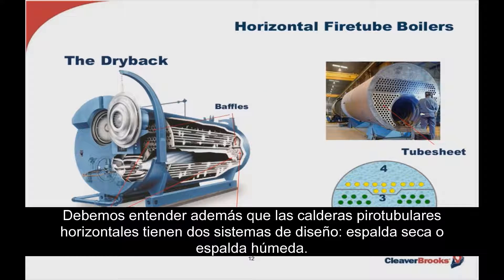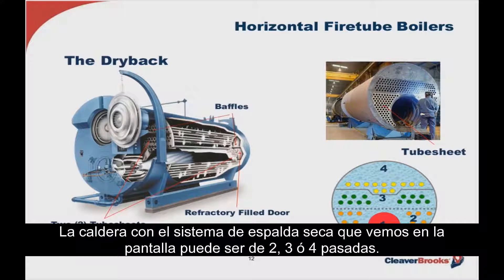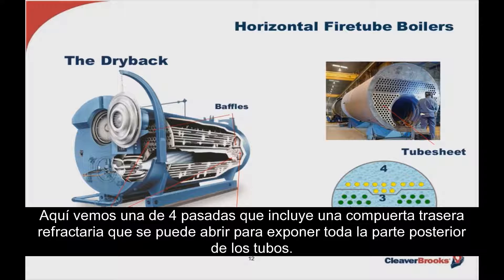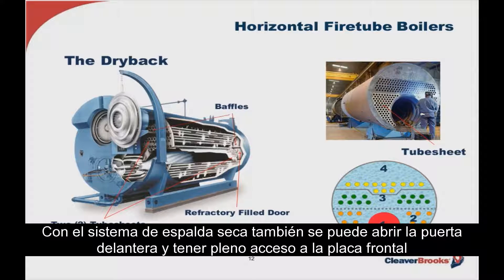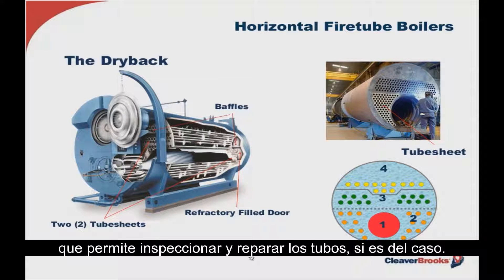The horizontal fire tube boiler comes with either a dry back or wet back design. The dry back fire tube can be either a two-pass, three-pass, or four-pass design. It includes a refractory-filled rear door which can be opened to expose the entire rear tube sheet and the tubes affixed therein. In a fire tube boiler, the flame and hot gases are contained within the tubes and the water surrounds them. You can also swing the front door for full access to the front tube sheet — all for inspection and tube and furnace repair if necessary.